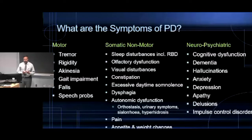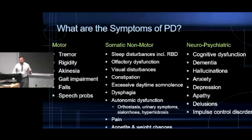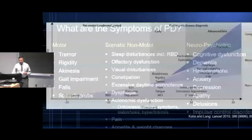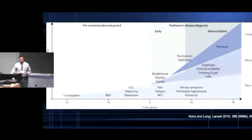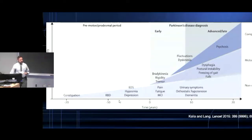If you understand Parkinson's disease, you understand a lot about the nervous system, because it's really a nervous system-wide neurodegenerative disorder — it's not just the tremor or the gait impairment. In fact, some symptoms predate the classical symptoms. Epidemiological studies show that patients quite reliably complain of constipation as their initial symptom, predating the onset of motor symptoms.